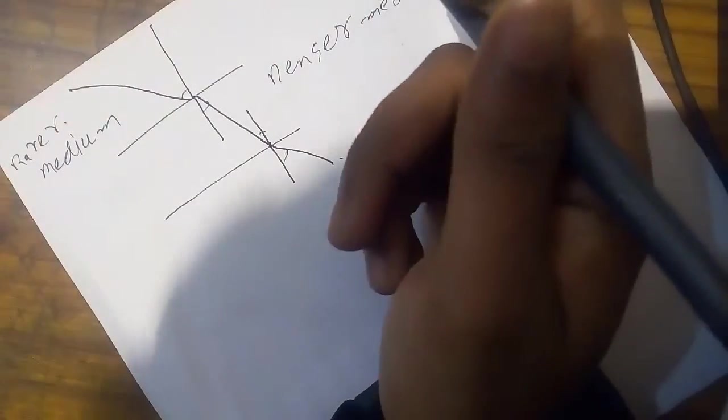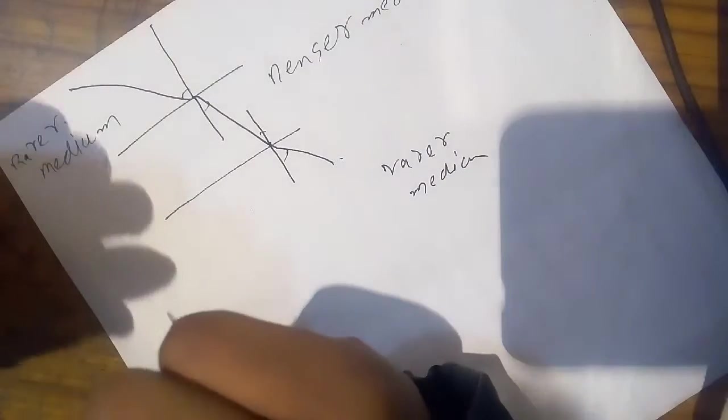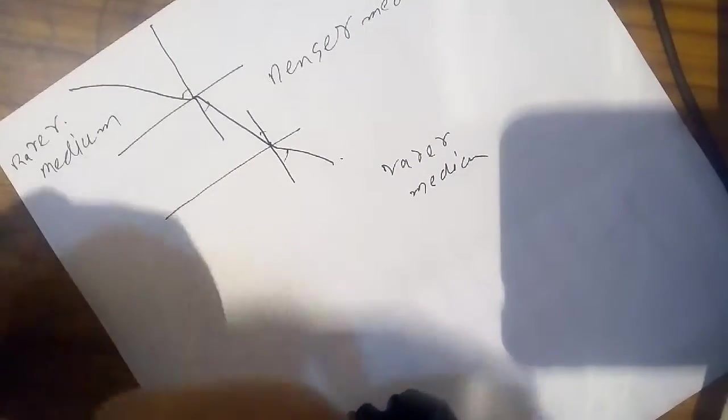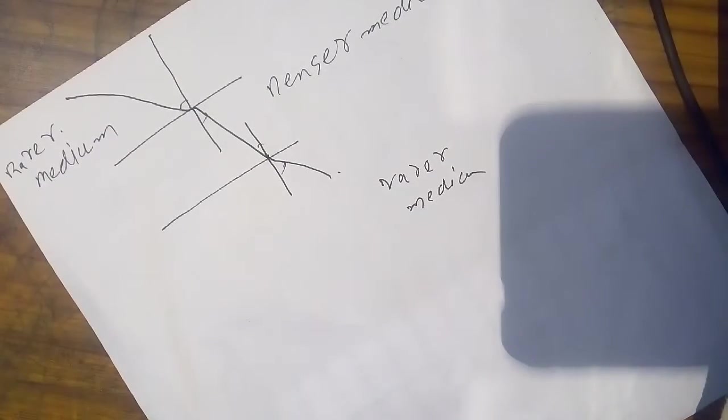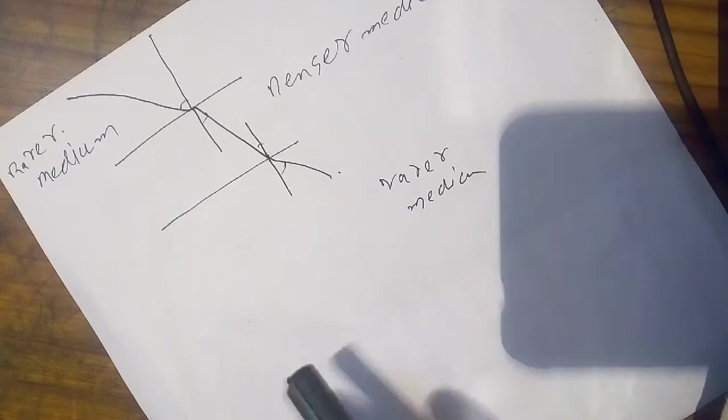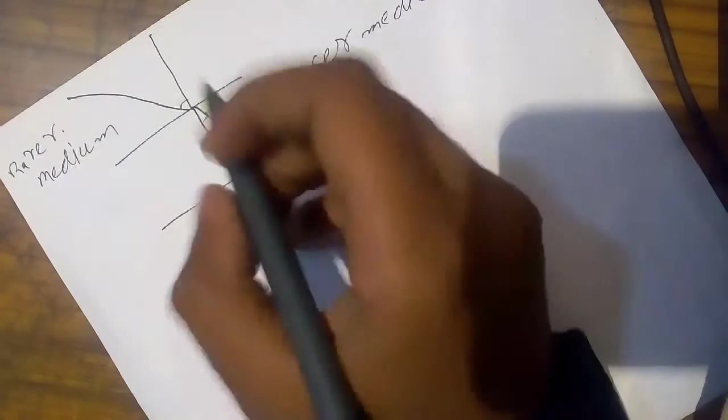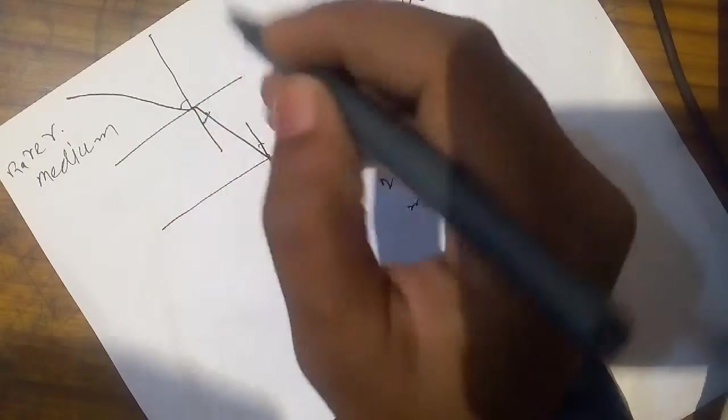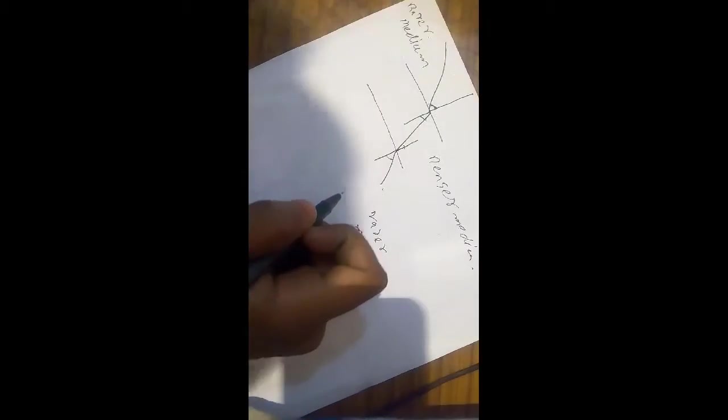What is the reason for bending? It is optical density. And the impact of optical density is that the speed of light differs from rare medium to denser medium.